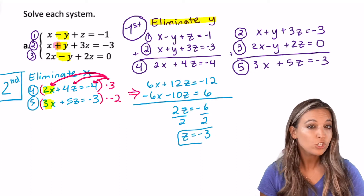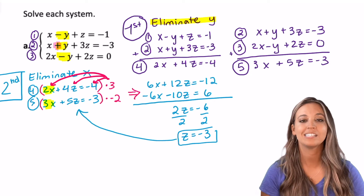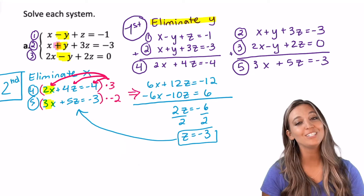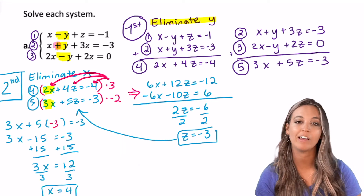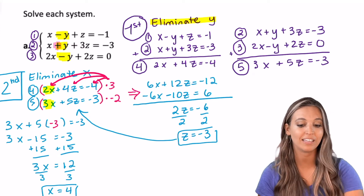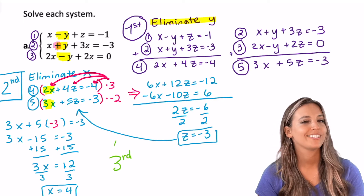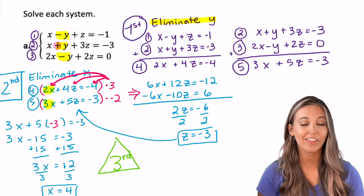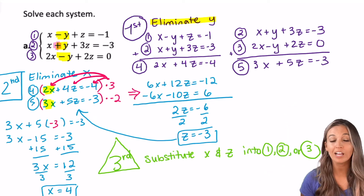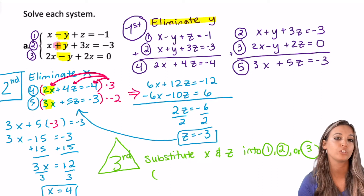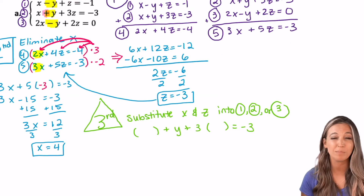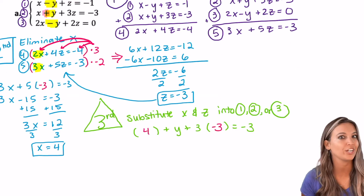Now let's finish solving this smaller system. Plug z = -3 back in to solve for x. I chose to substitute into equation five — in some cases one equation is easier than the other. That gives x = 4. Now for the third step, in a triangle: with z and x known, I just need y. I can plug these two values into any one of the original equations one, two, or three. I'll choose equation two because solving for y is straightforward with a positive y already there.